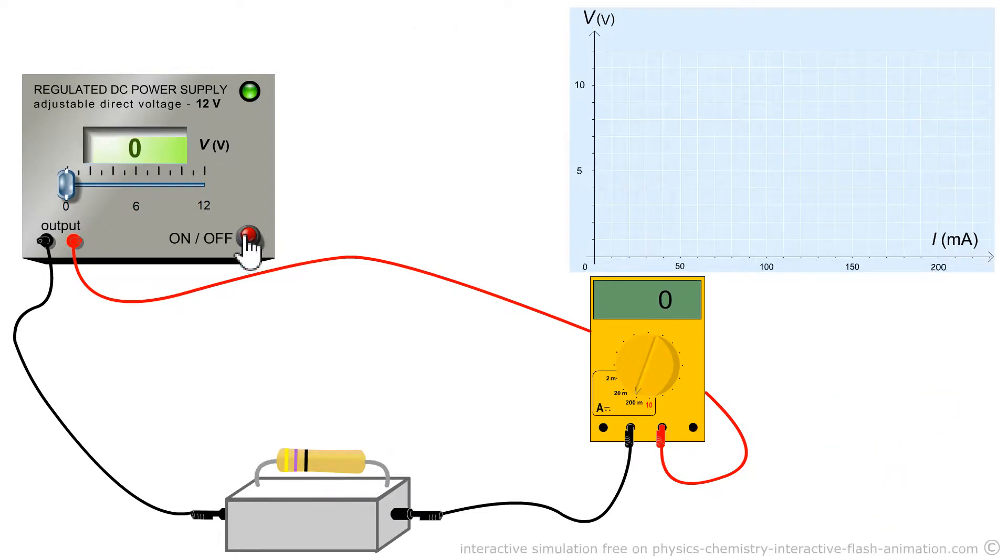We will practice another time with this ohmic conductor. Here is the resistor with its 3 yellow, purple, and black rings. We will choose integer values for the voltage. So in milliamps we have 42.6 for 2 volts. If I choose another integer value, 4 volts, I will have 85.1. If I choose another integer value for V, 6 volts, 127.7. And finally choose 10 volts. The response in milliamps is 212.8.